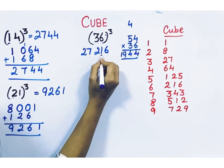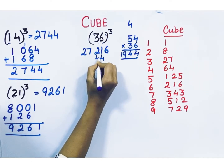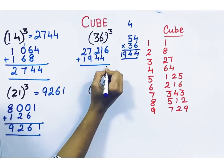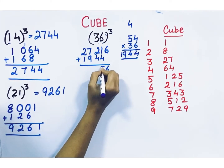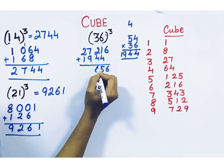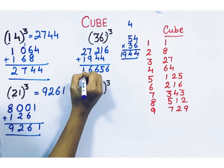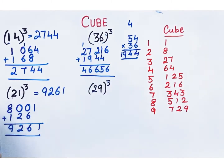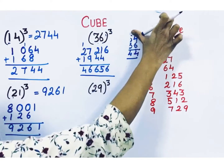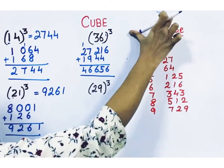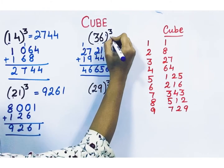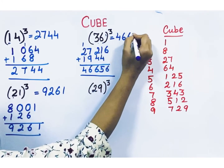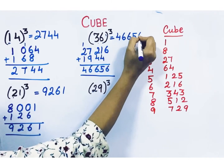Leave one space and write like this. Then do the addition to get the cube. So 36 cube is 46656.